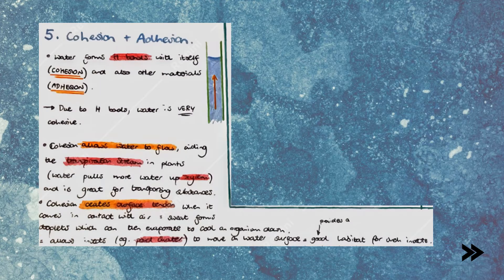Finally, we have cohesion and adhesion. Cohesion is when water forms hydrogen bonds with itself, and adhesion is when water forms hydrogen bonds with other materials. Due to hydrogen bonding, water is very cohesive. Cohesion allows water to flow, aiding the transpiration stream in plants, where water pulls more water up through the xylem as it moves as a continuous column. This is great for transporting substances.